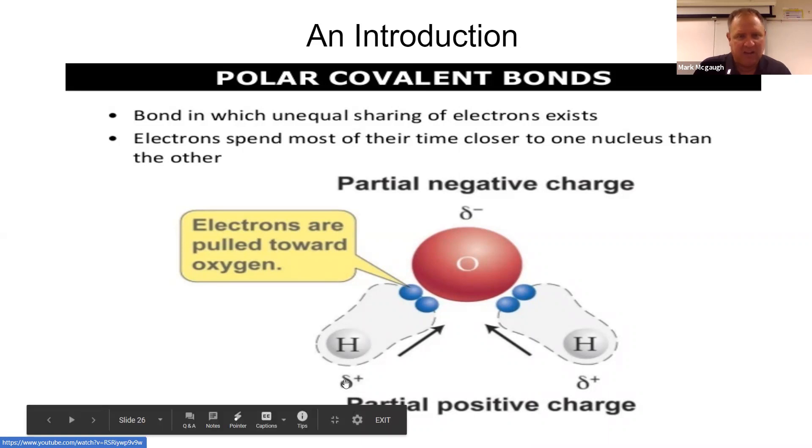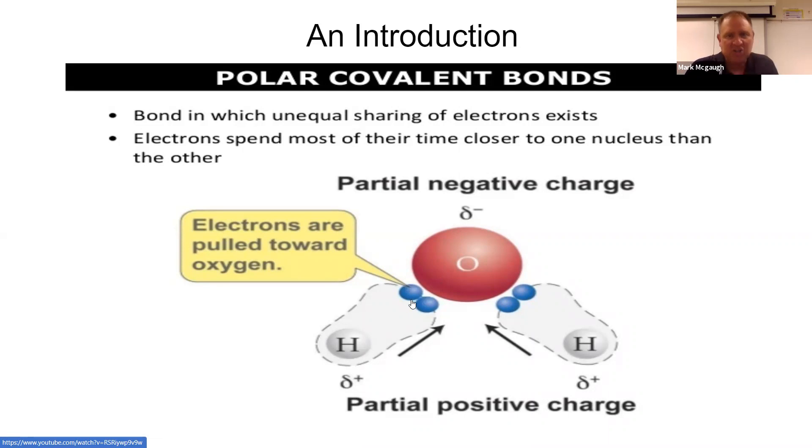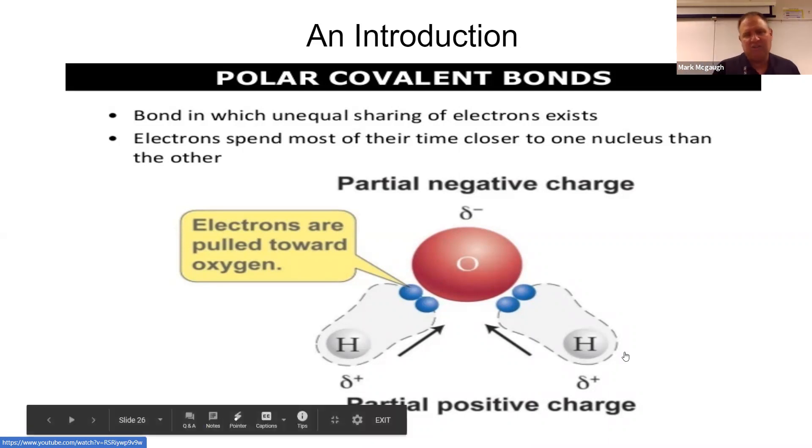Oxygen has a slight negative charge, a small negative charge, and hydrogen has a slight or small positive charge, because these electrons spend more time with the oxygen than they do the hydrogen.